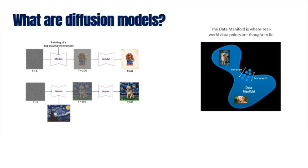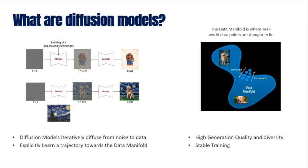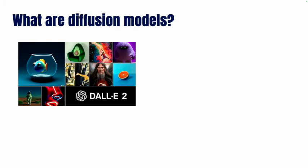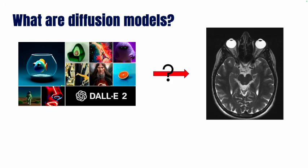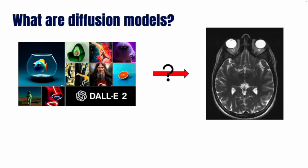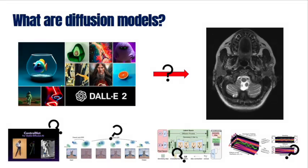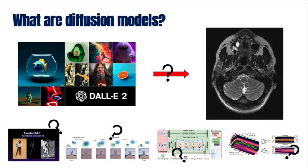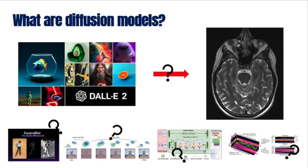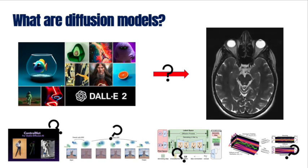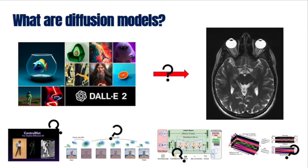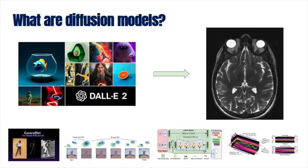This is where diffusion models come in, which combine the best of both worlds. They learn to iteratively transform noise into a data point and can generate a wide variety of images, and are stable to train. Diffusion models have had great success in standard 2D images, but their application in medical imaging is still a question. There are many variants of the diffusion model which can make it confusing as to what to use. This thesis aims to give a comprehensive study to make it clear what works and what doesn't, and remove all question marks.